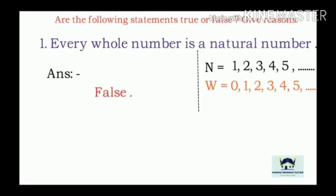Now let us take some exercise examples. Are the following statements true or false? Give reason. First question: Every whole number is a natural number — is it true or false? The natural number set N consists of counting numbers: 1, 2, 3, 4, 5 and so on. But the whole number set W = {0, 1, 2, 3, 4, 5, ...}. You can see that 0 is in the whole number set but 0 is not a natural number. So the statement 'every whole number is a natural number' is false.